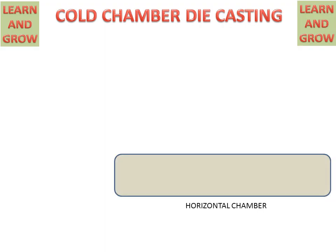Firstly, we will discuss the parts of cold chamber die casting. There is a horizontal chamber, and because of this chamber, it is called cold chamber die casting. In hot chamber die casting, a molten metal container is used, whereas in cold chamber die casting, this horizontal chamber is used.